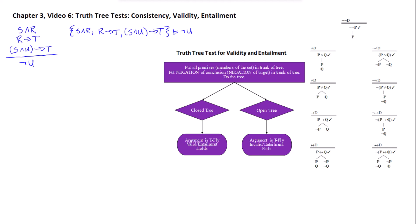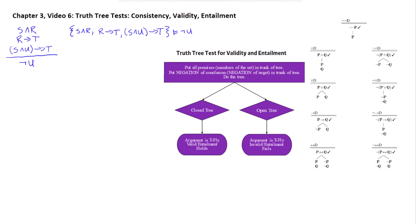The truth tree tests for validity and entailment are equally as simple as the test for consistency because they're essentially just a test for consistency. You may recall that one way of defining validity is that the set consisting of the premises plus the negation of the conclusion is inconsistent. The same thing goes for entailment: a set entails a target if and only if the set consisting of the original set plus the negation of the target is inconsistent. Hence, our truth tree test for validity/entailment: we put all the premises or members of the set into the trunk of the tree, and then we put the negation of the conclusion or target into the trunk of the tree.